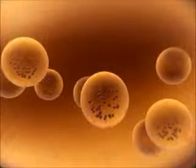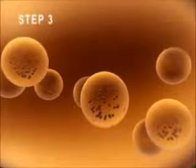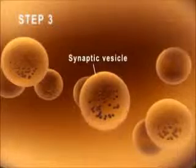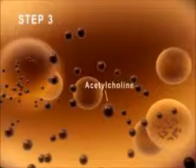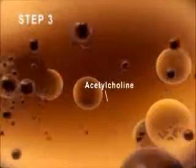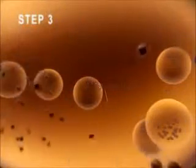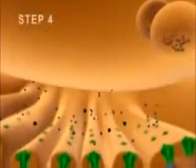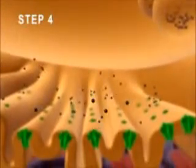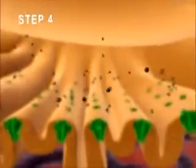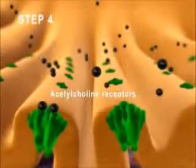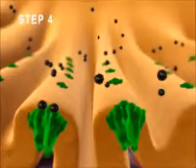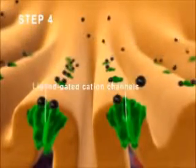Step 3. Calcium entry causes synaptic vesicles to release acetylcholine via exocytosis. Step 4. Acetylcholine diffuses across the synaptic cleft and binds to acetylcholine receptors which contain ligand-gated cation channels.